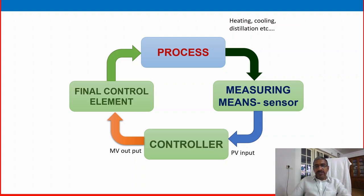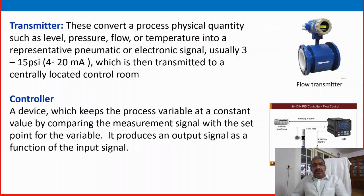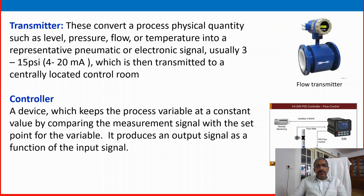This is the simple variable process control loop. Please note: process variable (PV) is the input and manipulated variable (MV) is the output. The transmitter converts a process physical quantity such as level, pressure, temperature, or flow into a representative pneumatic or electrical signal — usually 3 to 15 PSI or 4 to 20 milliamps — which is then transmitted to a centrally located control room.